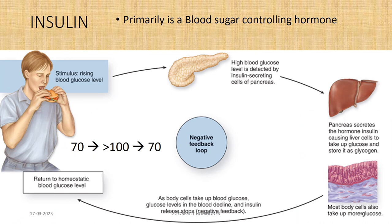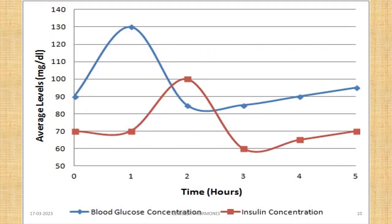Insulin is primarily a blood sugar controlling hormone. When we eat anything containing carbohydrates, the blood glucose level rises fast, which gives a stimulation to the pancreas. The pancreas then secretes insulin, which ultimately shifts blood glucose from the plasma into the hepatocytes — the liver cells — or into the skeletal muscle cells. In this graph, we can see the blue line is blood glucose, which rises after taking carbohydrate-rich food, and in response, after about 20 to 30 minutes, insulin secreted from the pancreas also starts rising and ultimately controls the sugar in the blood.